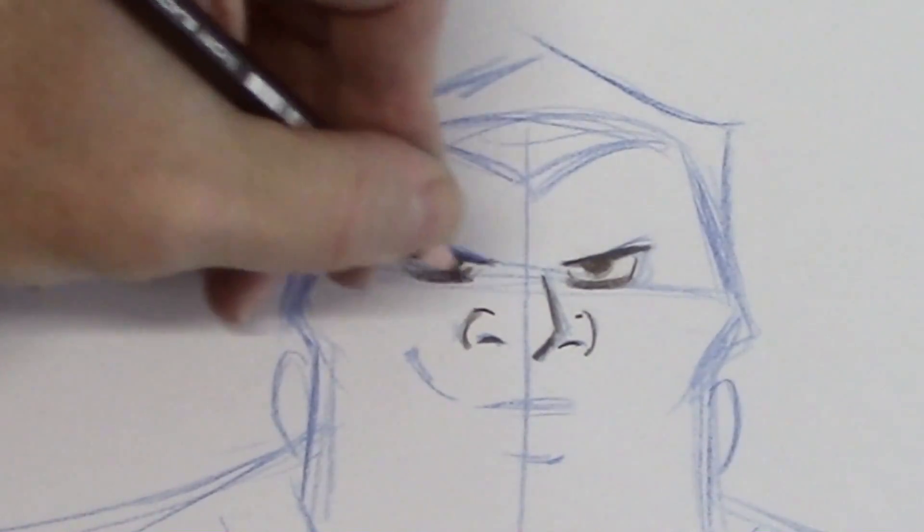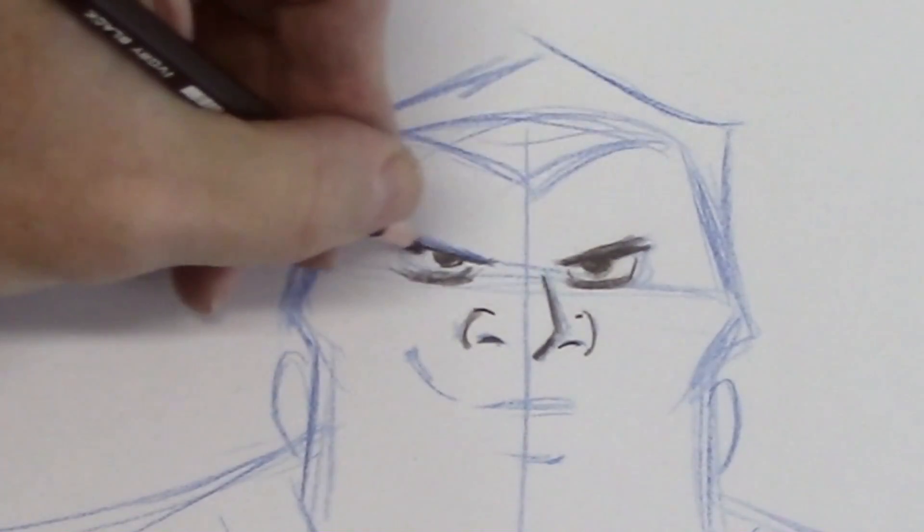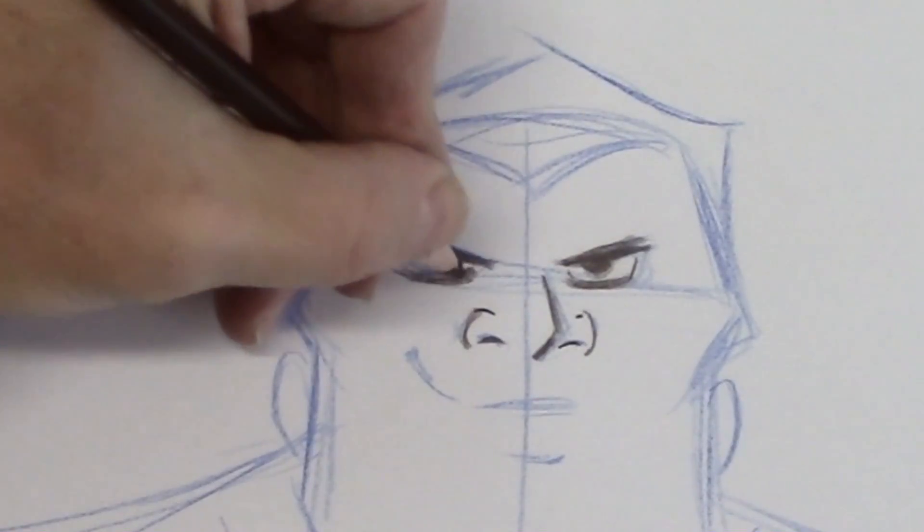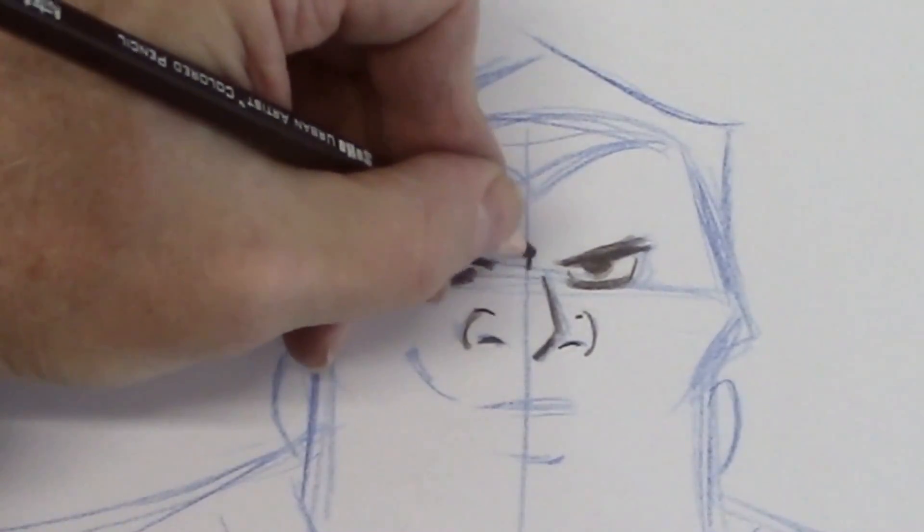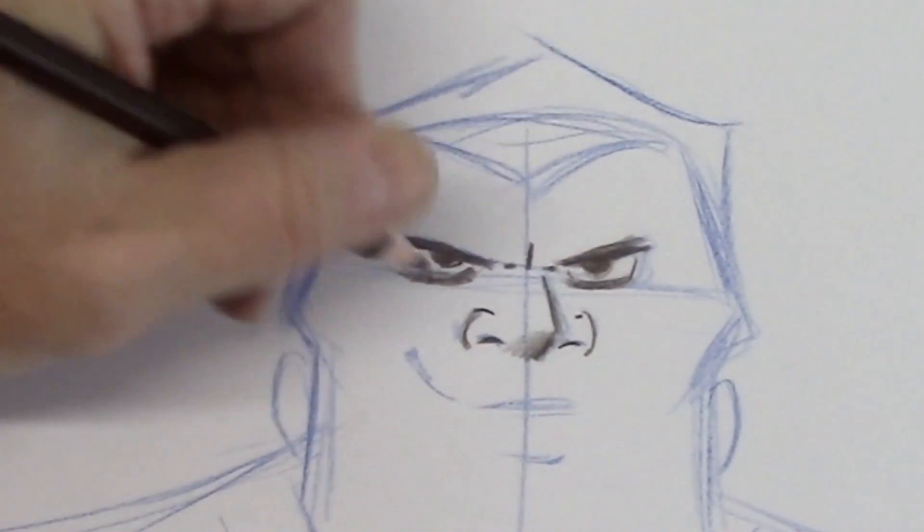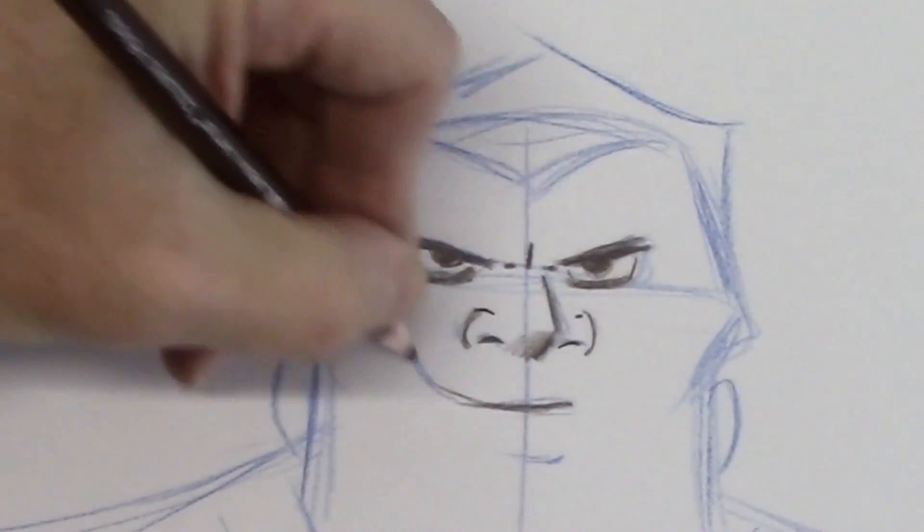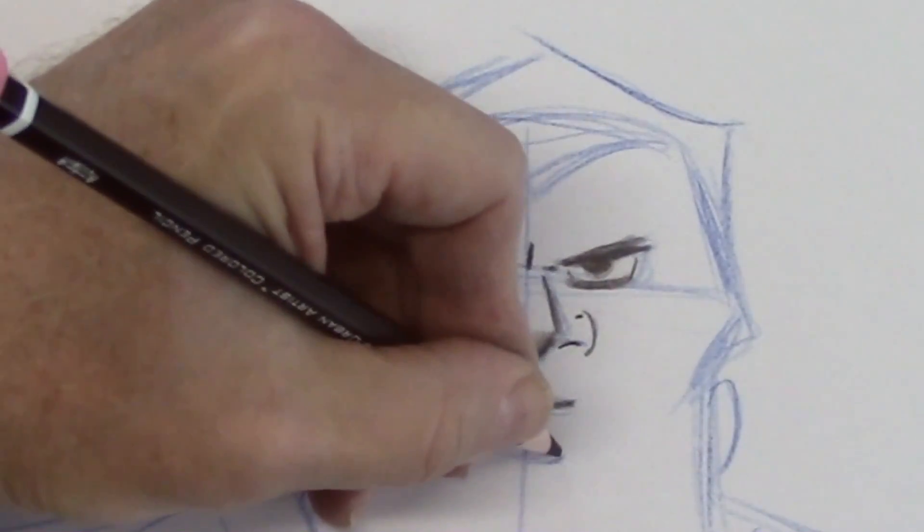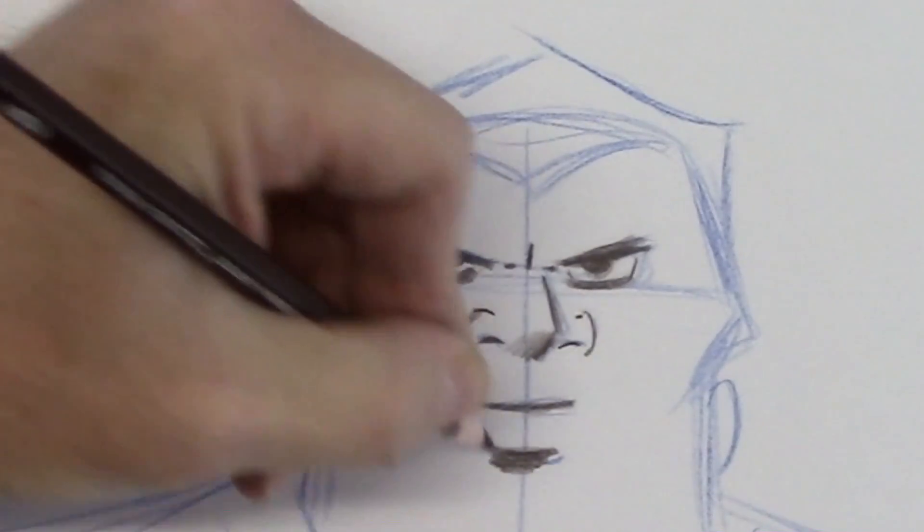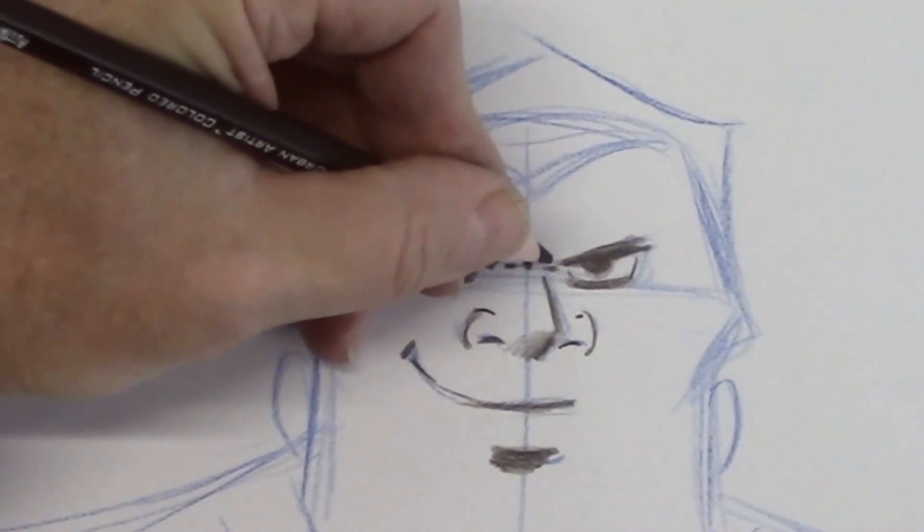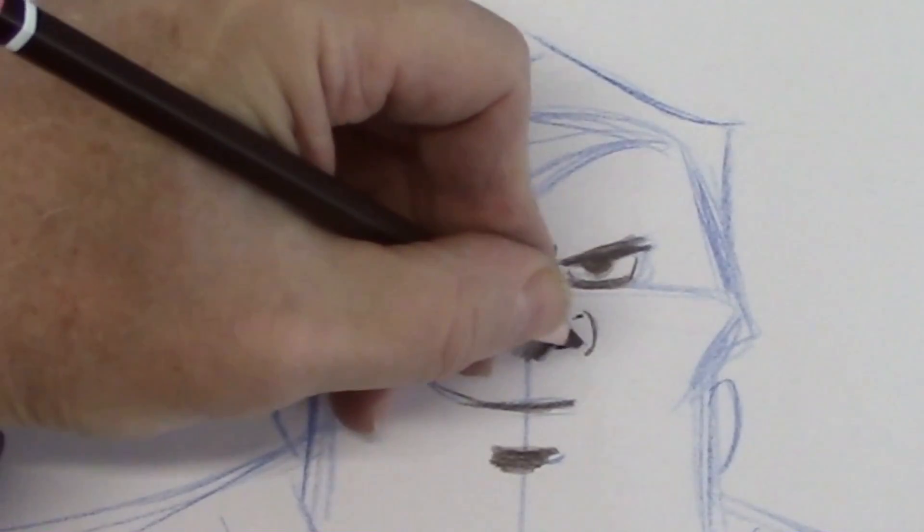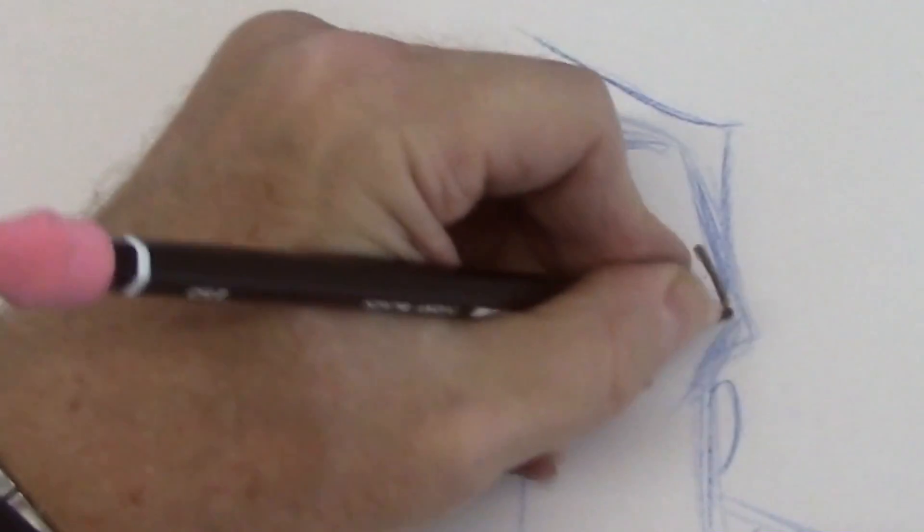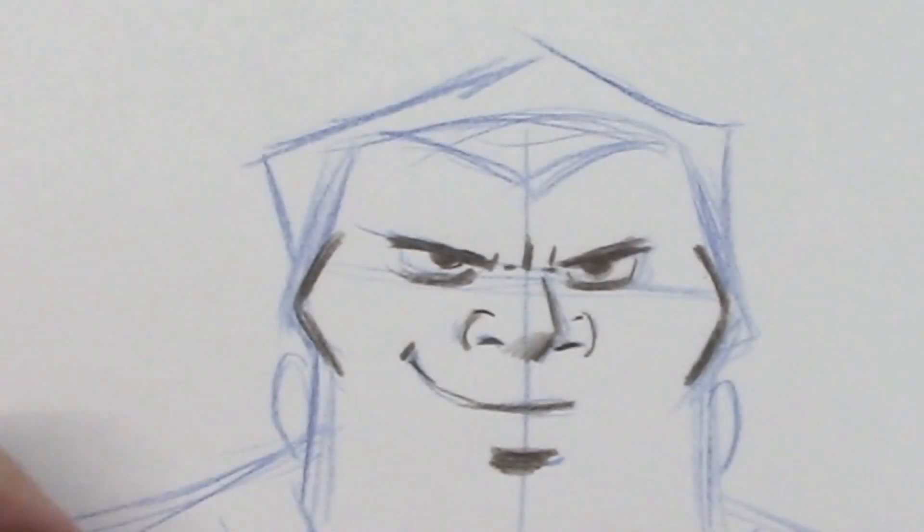Some lines and some darkness under the eyes. I'm gonna make the eyebrows a little bit thicker. Big thick lip with a lot of shadow under it. Nice, big cheekbones. You could injure someone with those cheekbones.